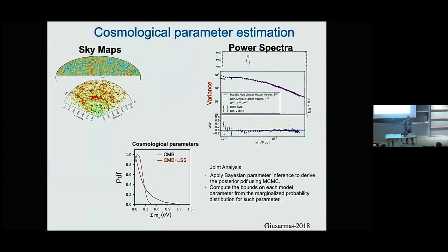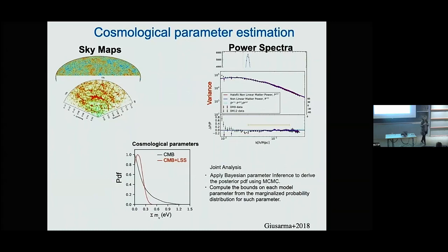Once we have the summary statistics, we apply Bayesian parameter inference to derive the posterior probability distribution using Markov Chain Monte Carlo. We want high accuracy for our parameters, so we combine different observables together to obtain high accuracy on the cosmological parameters and to break degeneracies between those parameters.